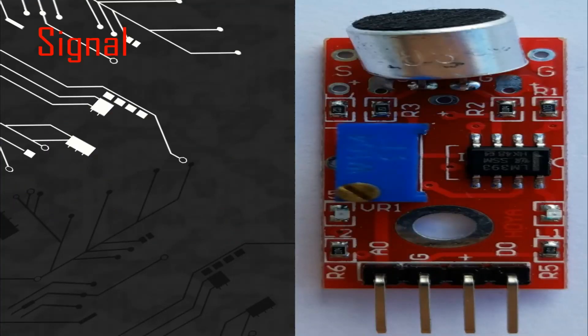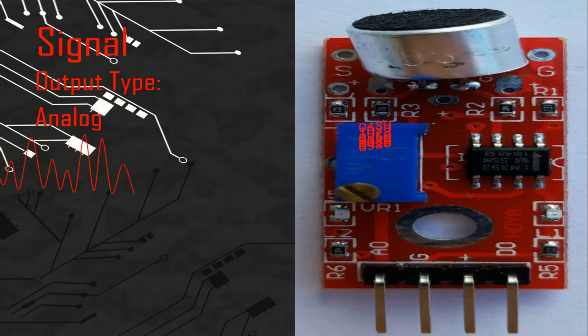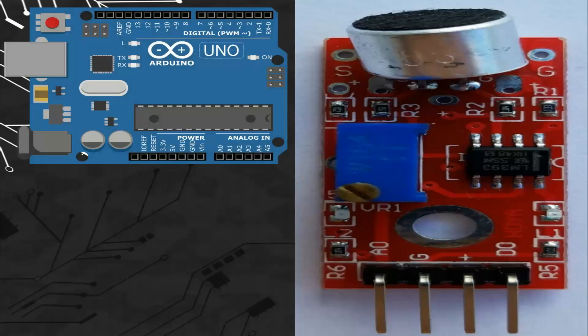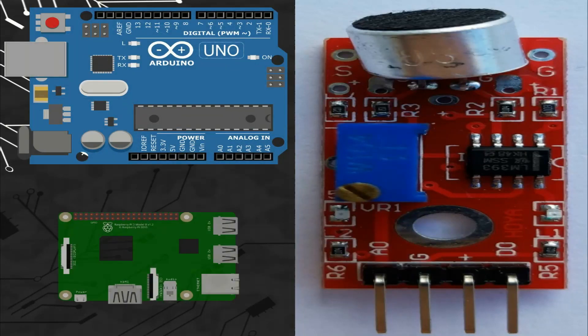So let's talk about the signal. This module gives two signals. We can connect the pin of the analog signal with any analog port, and the pin of the digital signal with any digital port of different microcontroller boards like Arduino or Raspberry Pi.